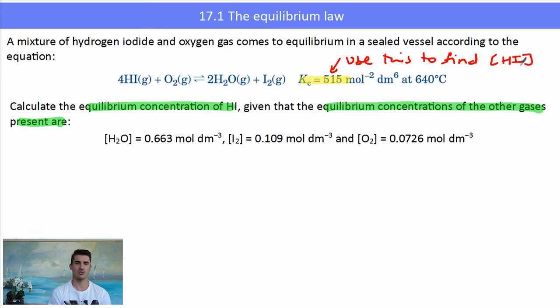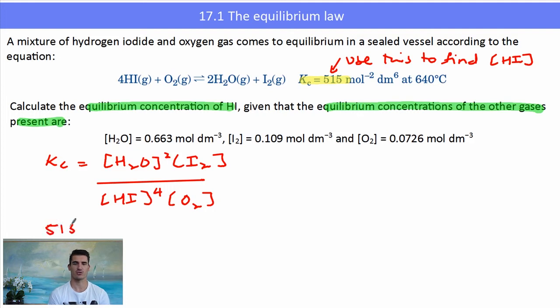We start with our equilibrium expression: concentration of products to the power of their coefficients over the concentration of reactants to the power of their coefficients, and we have HI to the fourth. That's going to provide a little bit of interest when we rearrange it. I sub in my values: I've got my K value, the concentration of H₂O, the concentration of I₂, HI is what we want to find so we'll leave that as is, and the concentration of O₂ as well.